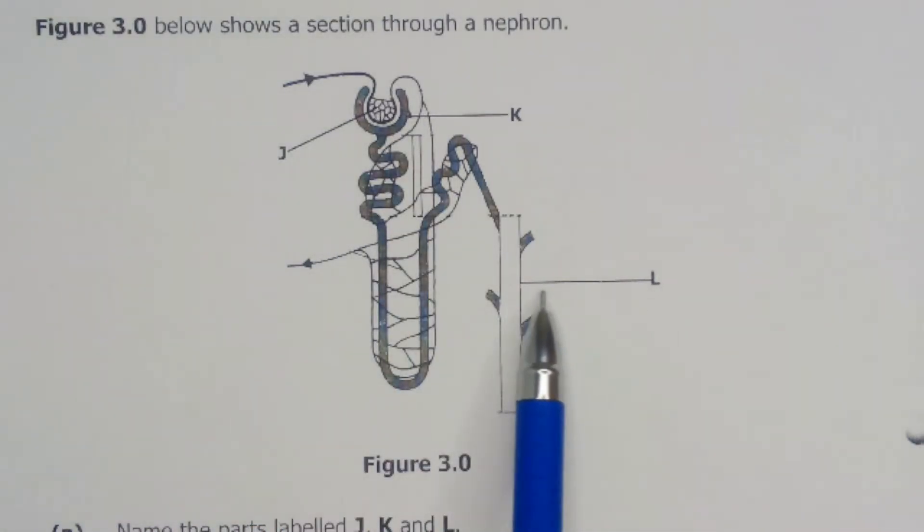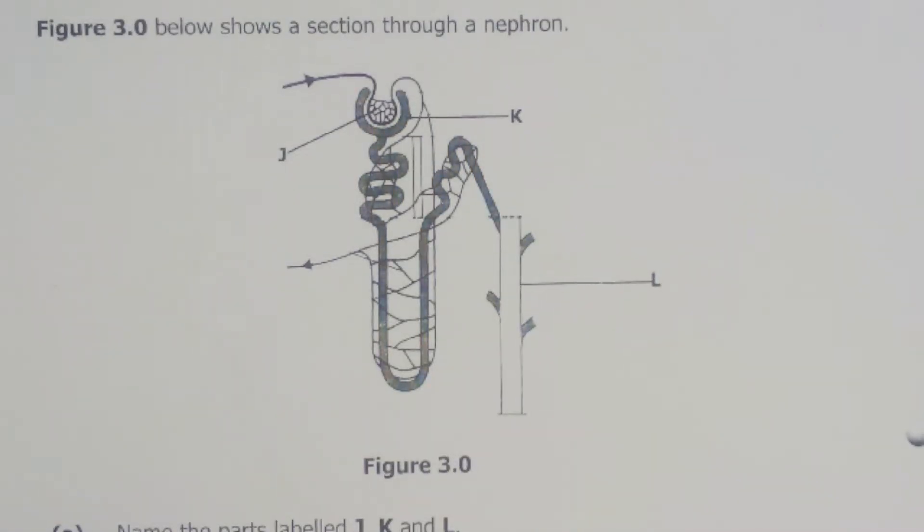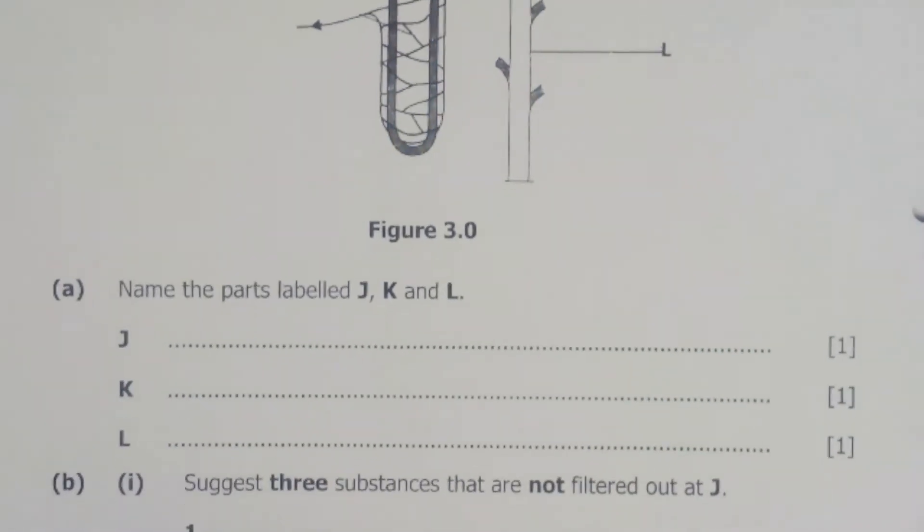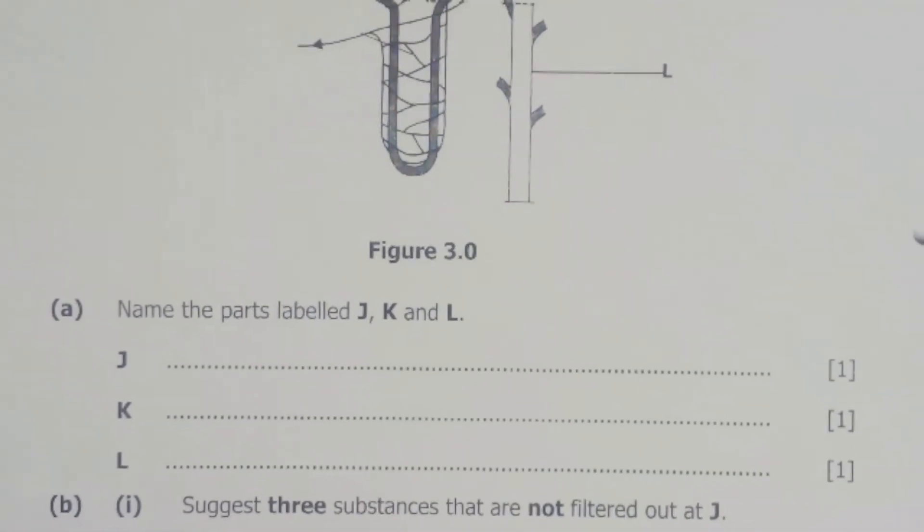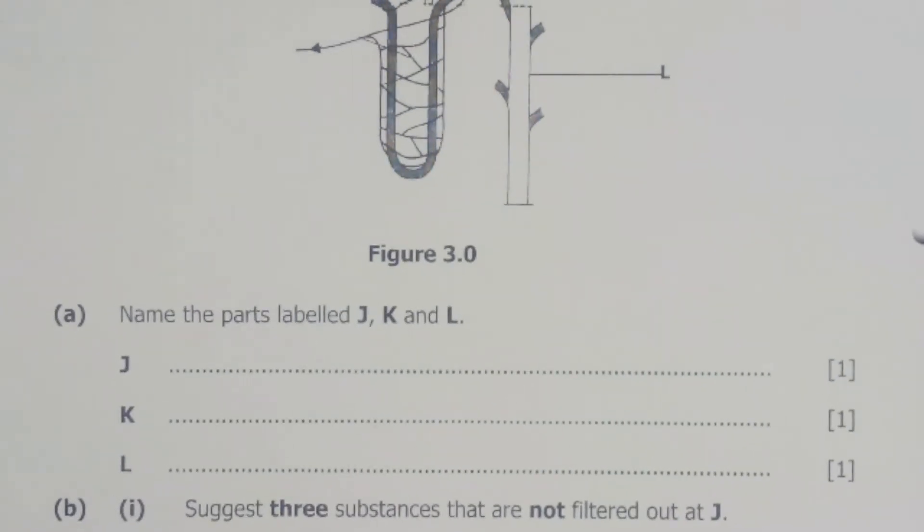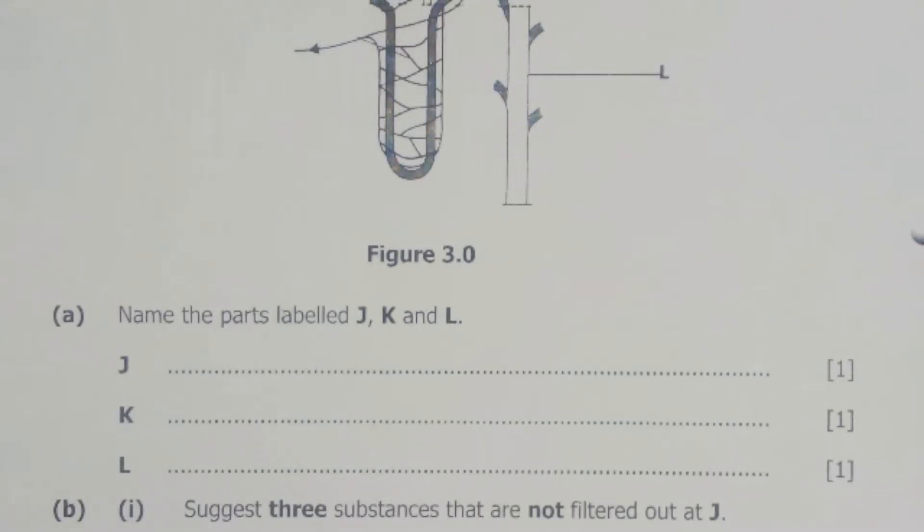Let's look at the questions which follow. Our first question is question number A, and for question number A it says: Name the parts labeled J, K, and L.